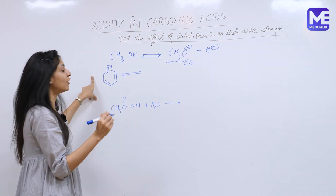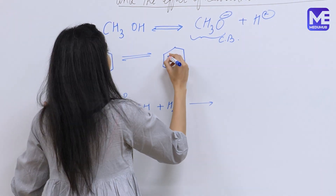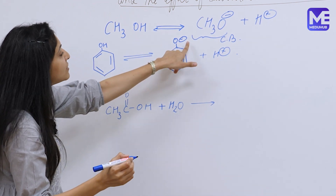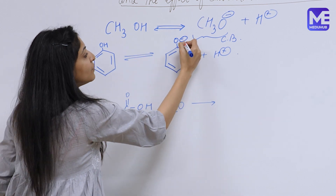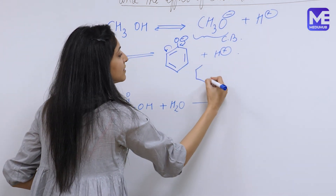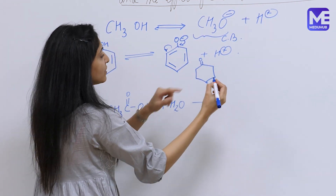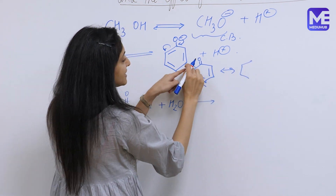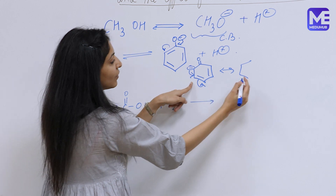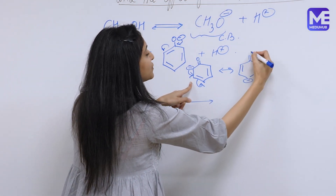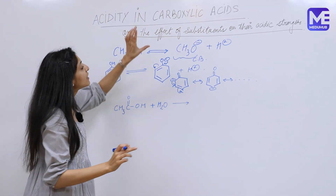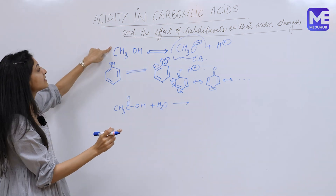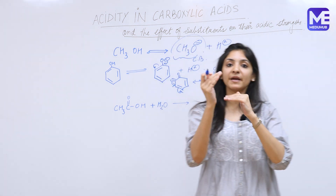Let us see what happens in the case of phenol. Phenol ionizes to give the phenoxide ion, which is O- and H+. In the case of phenol, the negative charge on oxygen is delocalized due to the presence of the benzene ring. We can draw the resonating structures to better understand this — the negative charge moves through the ring, giving various resonating forms. Hence, compared to the alkoxide ion, the phenoxide ion is more stable, and phenol is more acidic than methanol.